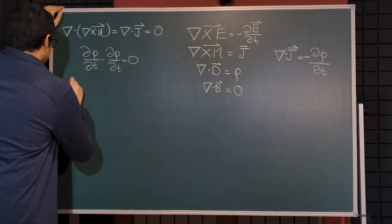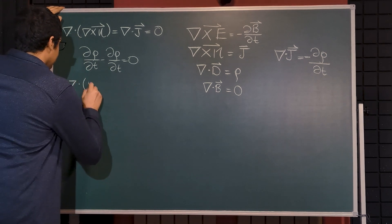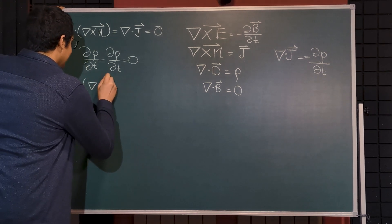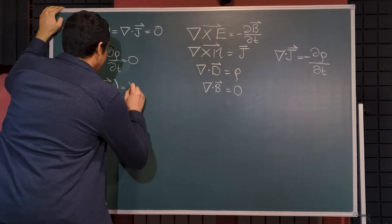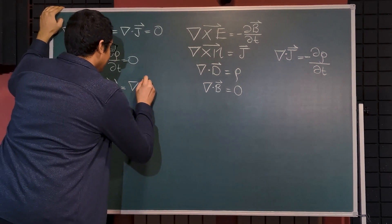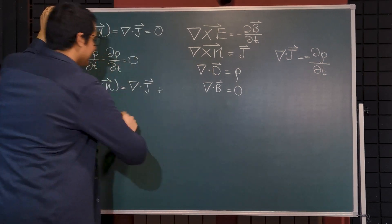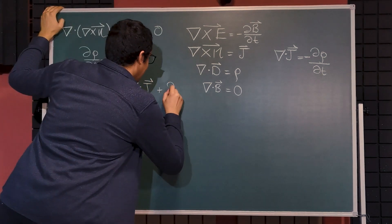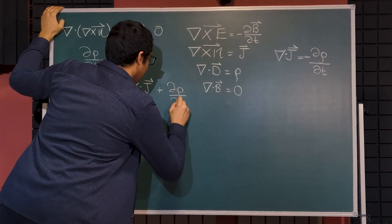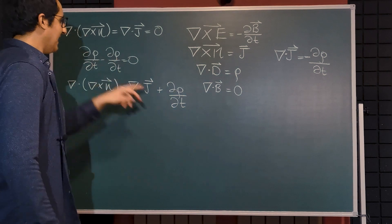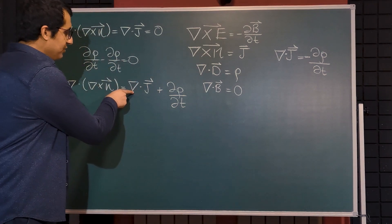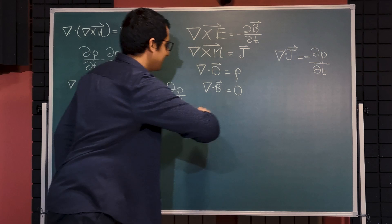Therefore, instead of saying divergence of curl of H is equal to divergence of J, we can also say there should be a term which is actually the negative of the continuity.